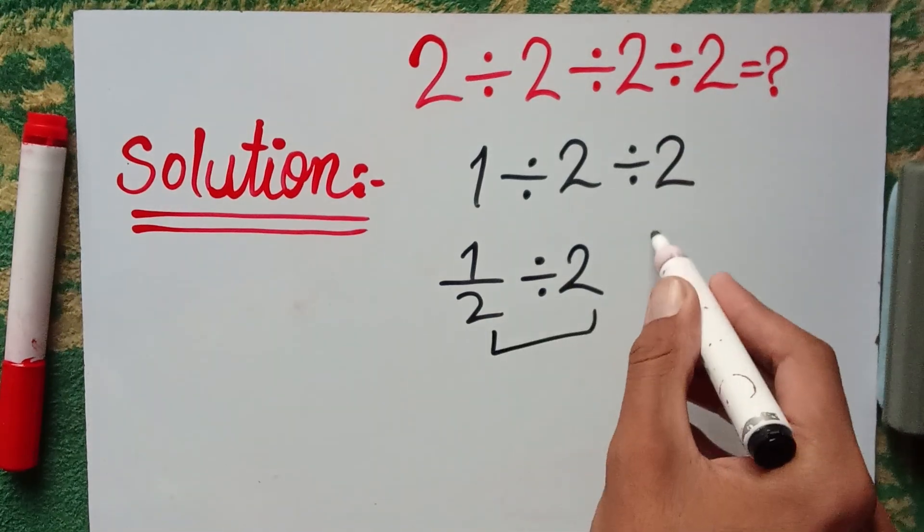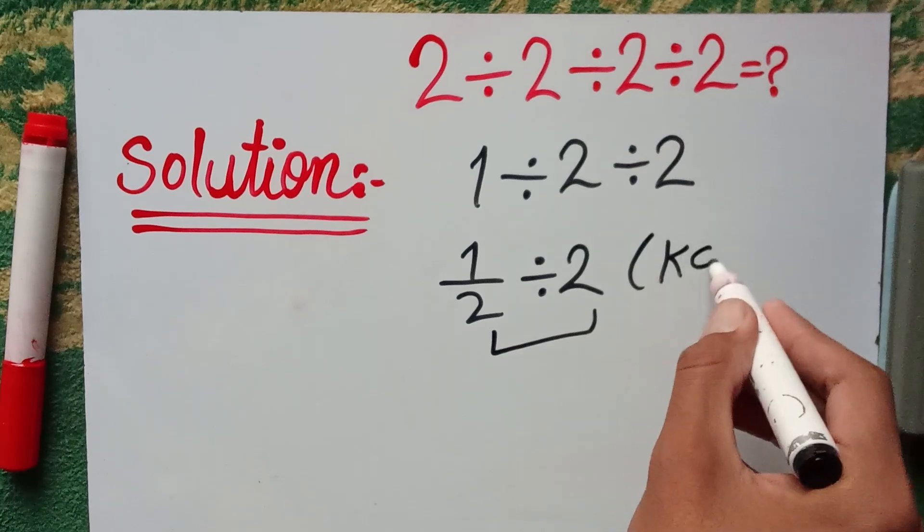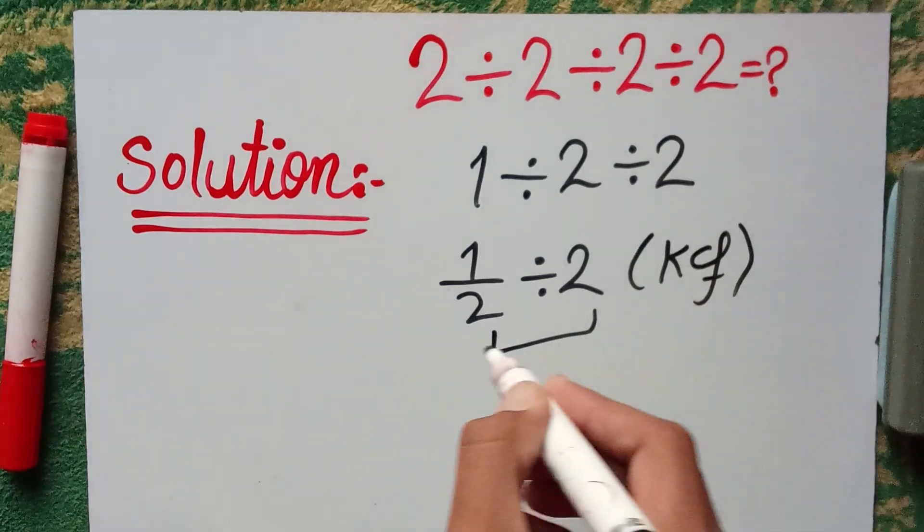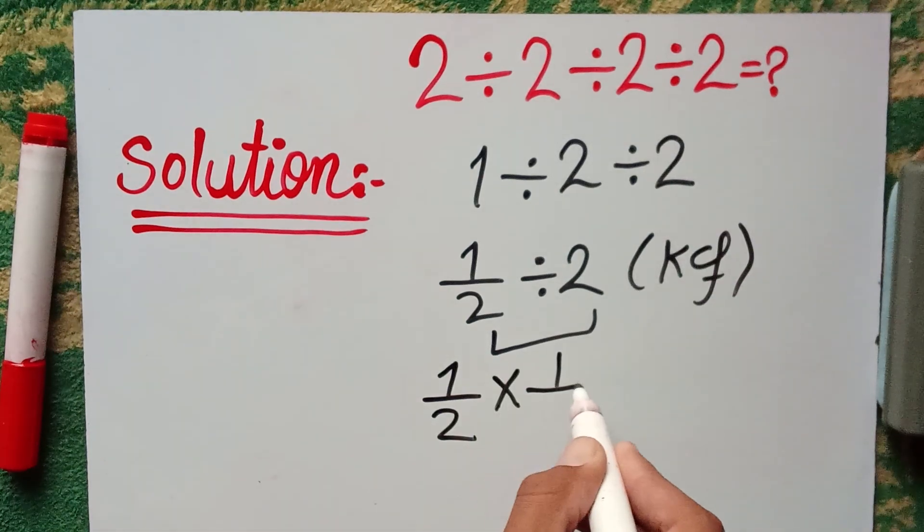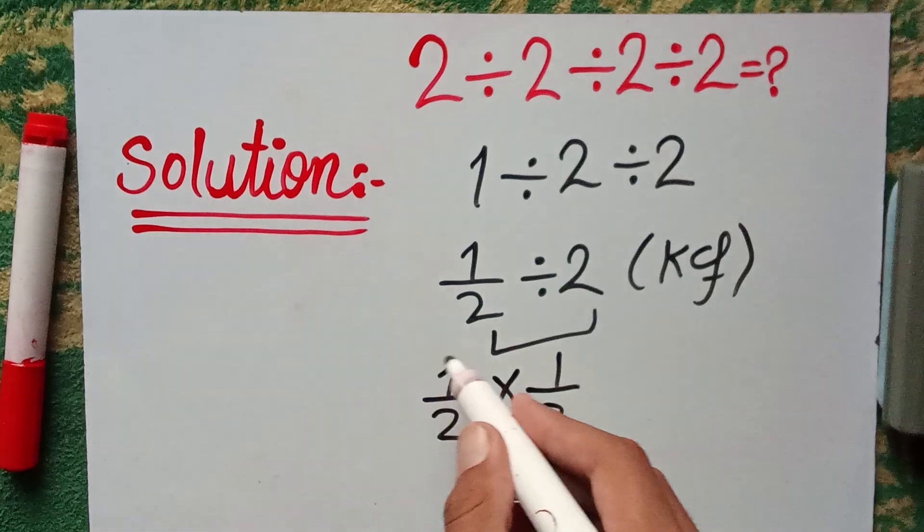According to the rule of KCF, which is called keep, change, flip, we can write the question as one-half times one-half.